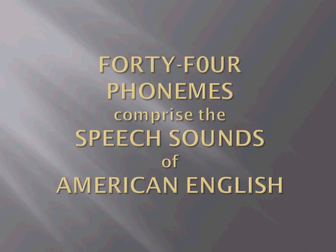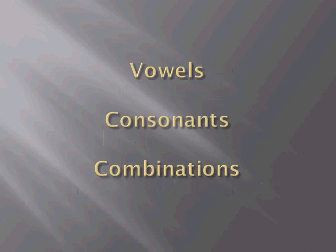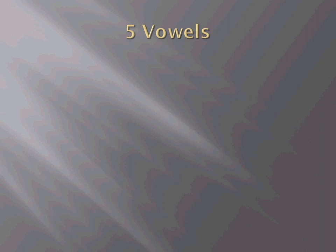There are 44 phonemes that comprise the speech sounds of American English. These sounds can be represented by vowels, consonants, or various combinations. The five vowels are A, E, I, O, U.